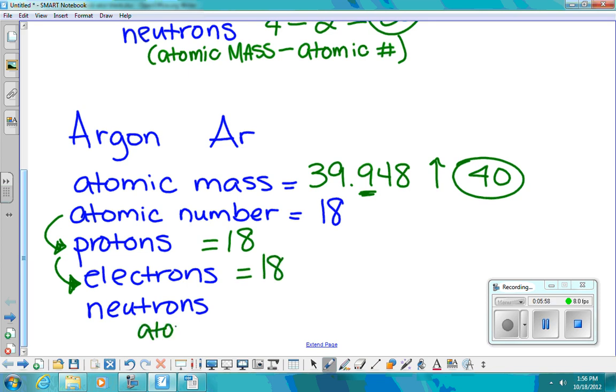Neutrons, we find these by taking the atomic mass minus the atomic number. So this is going to be 40 minus 18, which gives us 22.